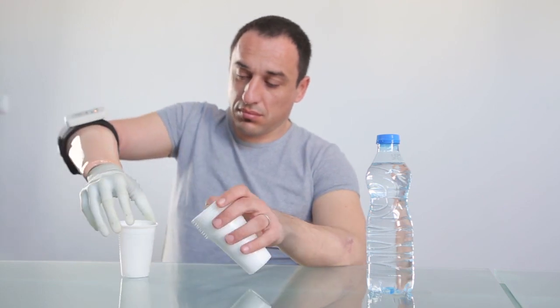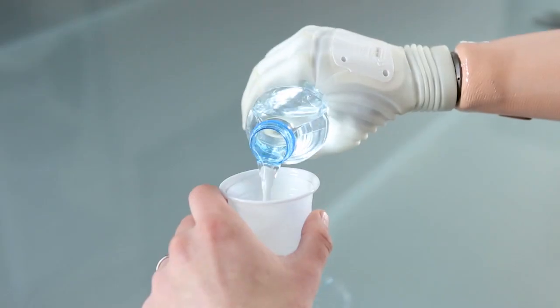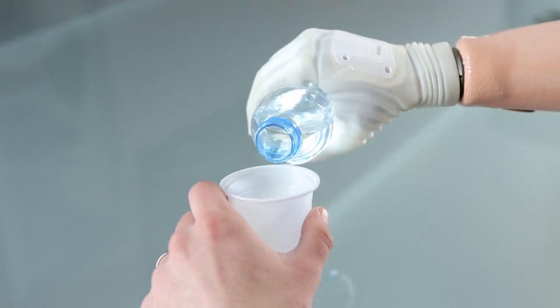The MaxHand system allows the wearer to control the pressure applied onto an object and to be aware of the state of the prosthesis without having to look at the hand.